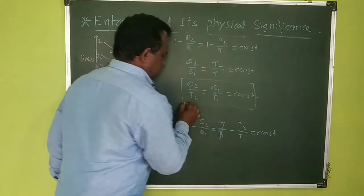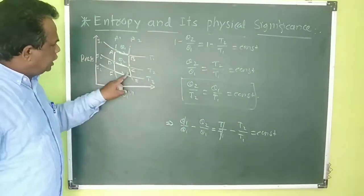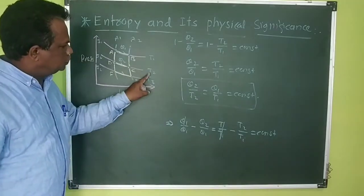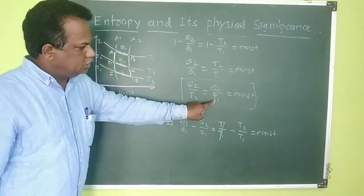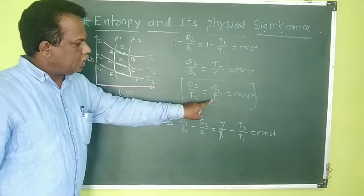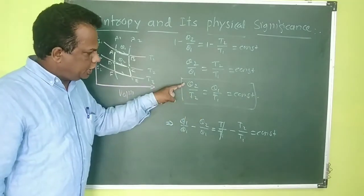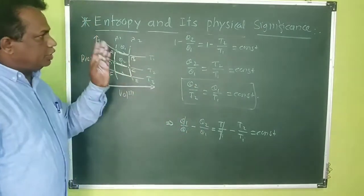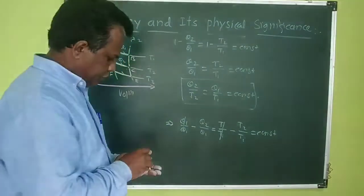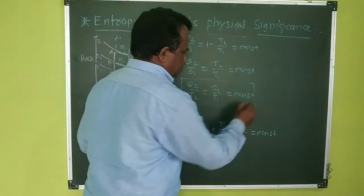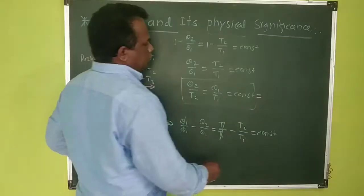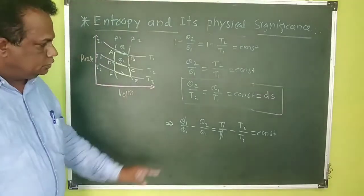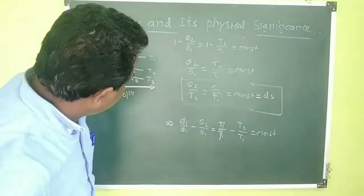Q2 is the heat energy of the thermodynamic system at temperature T2, and Q1 is the heat energy at temperature T1. The ratio of heat energy to temperature remains constant in an adiabatic process. This constant ratio is called entropy, denoted by dS, where dS is the change in entropy.